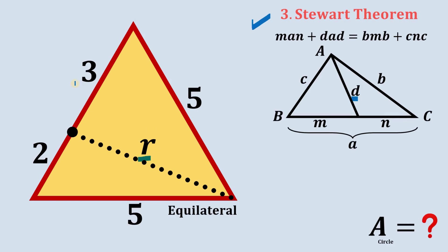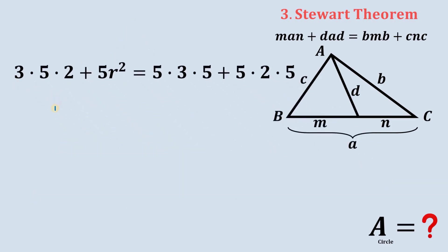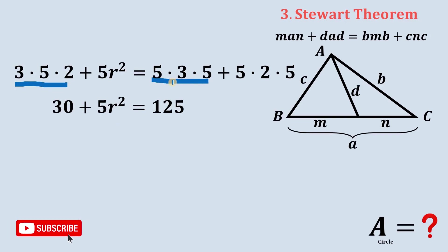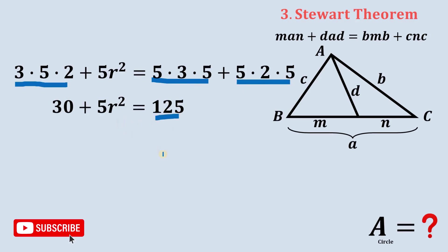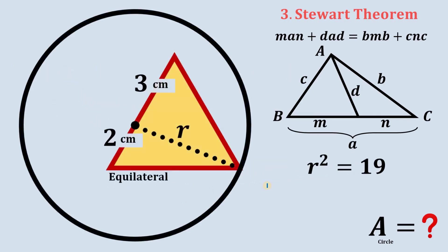In the Stewart theorem, d corresponds to r, m corresponds to 3, and n corresponds to 2, and both b and c equal 5. So: 3·5·2 + 5r² = 5²·3 + 5²·2. Simplifying: 30 + 5r² = 75 + 50 = 125. Subtracting 30 from both sides: 5r² = 95. Dividing by 5: r² = 19. Therefore the area of the circle is 19π square centimeters.